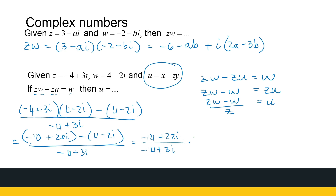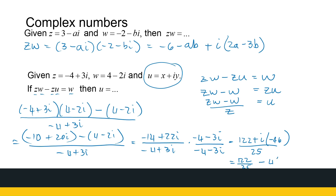To solve the division, we multiply numerator and denominator by the complex conjugate of the denominator: minus 4 minus 3i. The denominator gives 16 plus 9 = 25. The numerator works out to 56 plus 66 = 122 (real part) and minus 46i (imaginary part). So U equals 122 over 25 plus i times (minus 46 over 25). That completes our examples of multiplication, addition, and division using complex numbers.